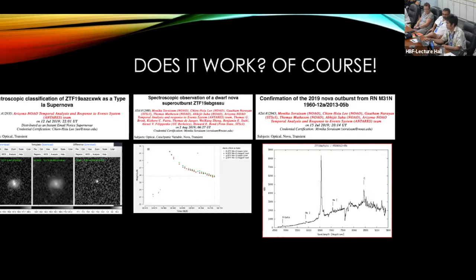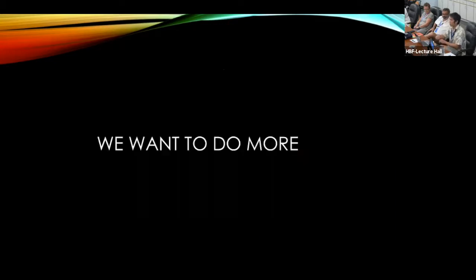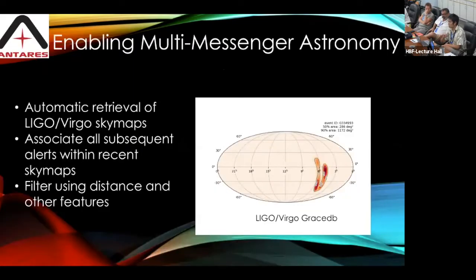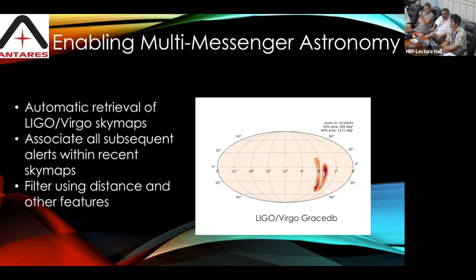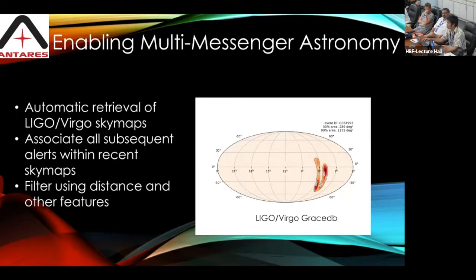We want to do more than simply filter alerts. This kind of system enables multi-messenger astronomy. We can take alerts not only from LSST but also from gravitational wave detectors and combine them to find optical counterparts. We connect to LIGO alerts and retrieve sky maps of possible gravitational wave event locations. Although those maps are large, ZTF has a large field of view, and future LSST will provide much deeper photometry, enabling rapid optical counterpart identification.